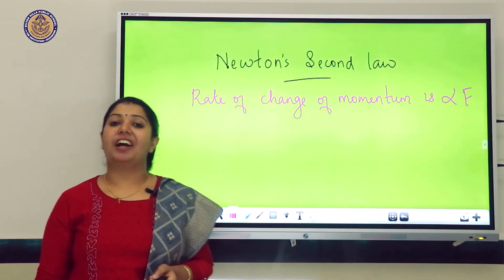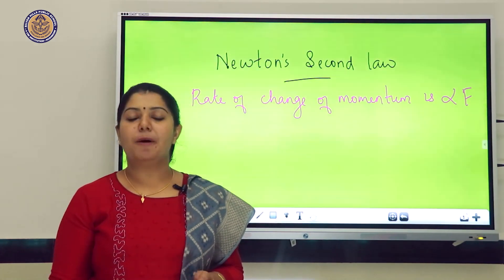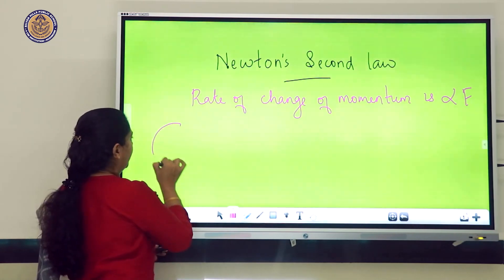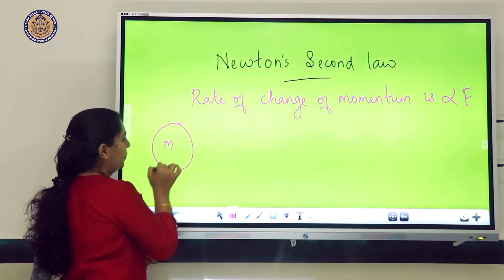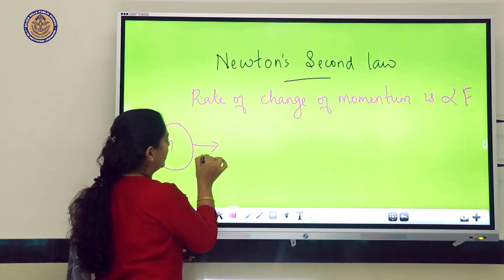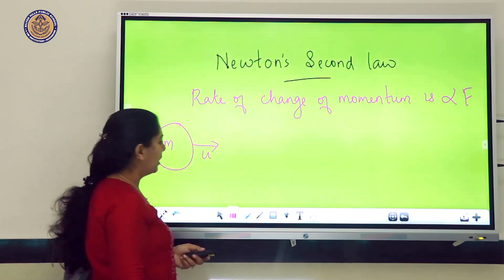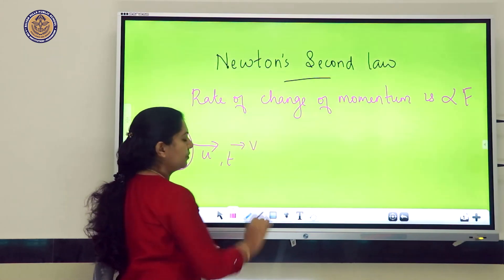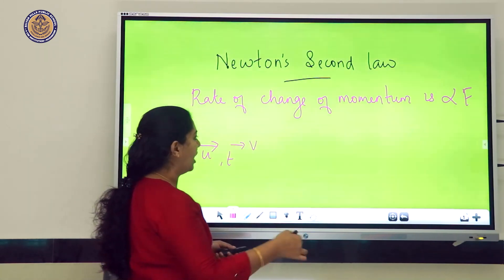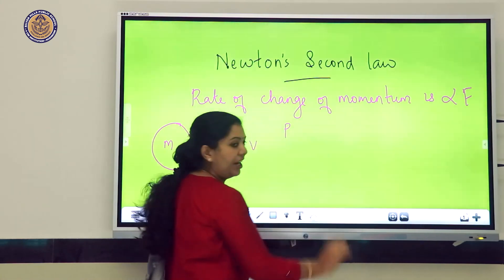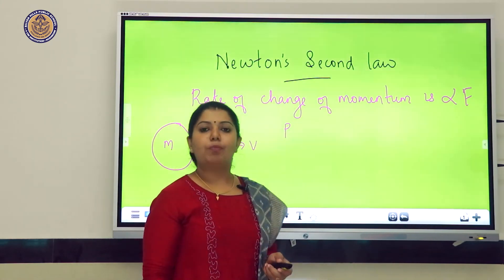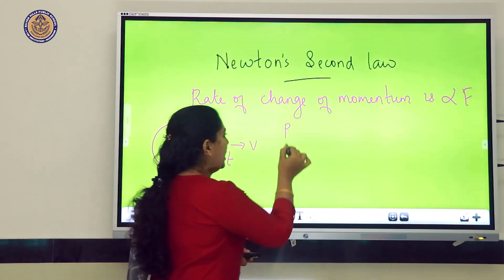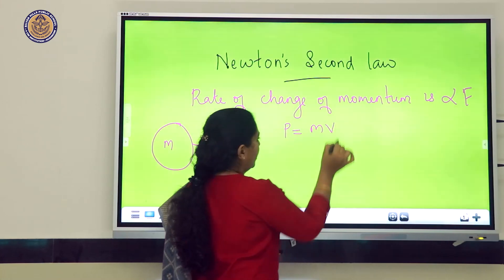We have a derivation to find the expression for force using Newton's Second Law. Consider an object of mass M moving with an initial velocity U. After time T, the velocity changes to V. The letter P indicates momentum, and momentum is the product of mass and velocity: P = mass × velocity.